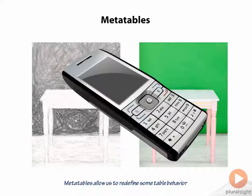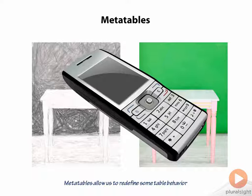For example, in your table, if you try to ask for an index that doesn't exist, and that table has a metatable defined, it can phone a friend and call that metatable — asking what it should do and what it should return in that case. If the metatable doesn't know, it's going to return back a nil. This gives you the ability to extend the functionality of your table by having the ability to phone a friend.